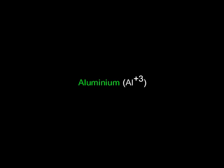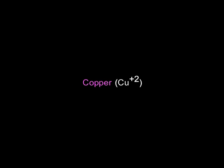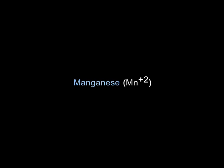Examples of cations are aluminum, ammonium, zinc, lead, copper, ferrous, calcium, magnesium, manganese, and barium.